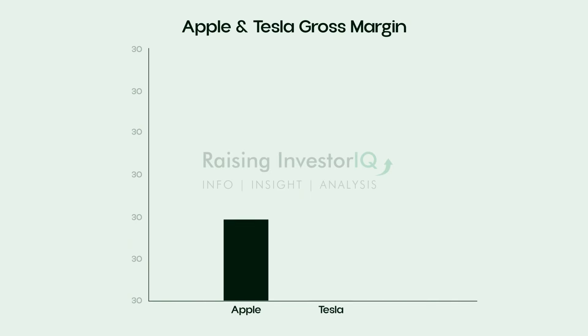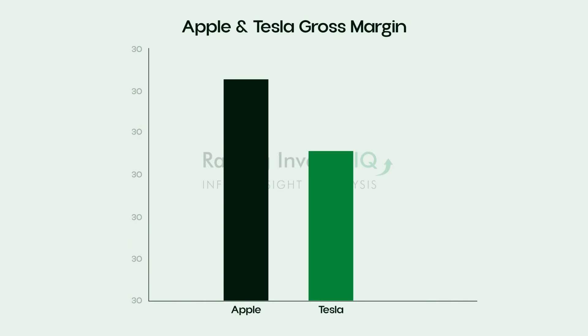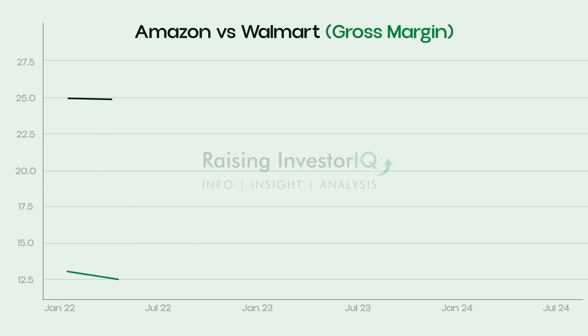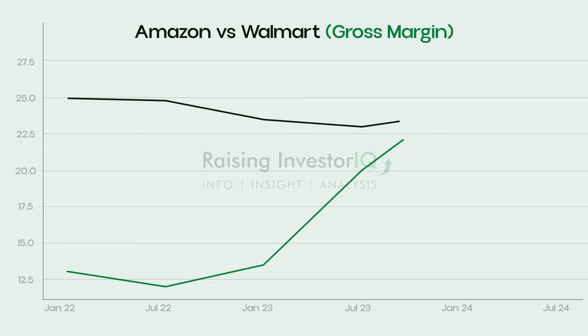Think of companies like Apple or Tesla — their higher gross margins enable them to outspend competitors on marketing or innovation, helping them maintain a premium market position. On the flip side, if a company's gross margin is lower than its competitors, it may need to focus on cost-cutting or differentiate its product so it can raise prices without losing customers — perhaps through better customer support, a more robust product warranty, or an eco-friendly alternative.